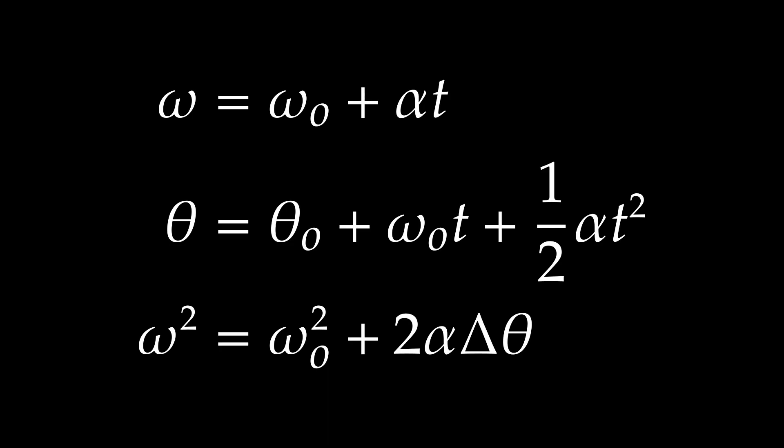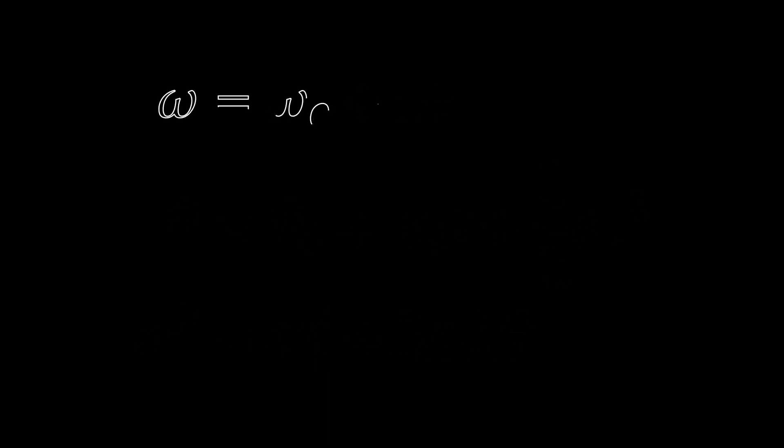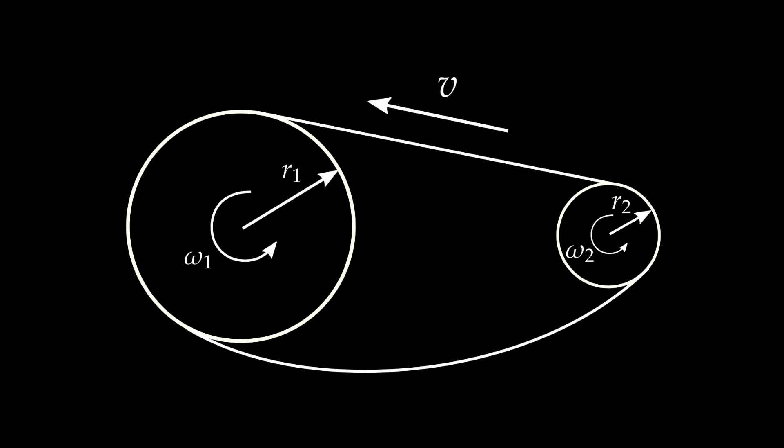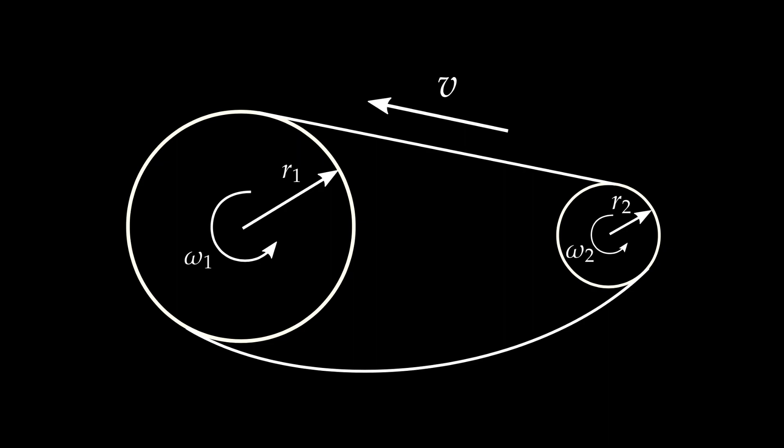Before finishing, let me do an example. Consider a large pulley wheel with radius R₁ rotating with angular velocity ω₁, and next to it a smaller pulley with radius R₂ rotating in the same direction with angular velocity ω₂.